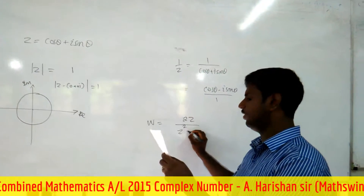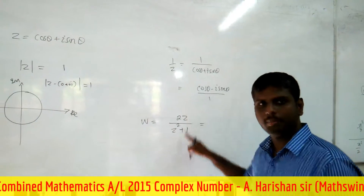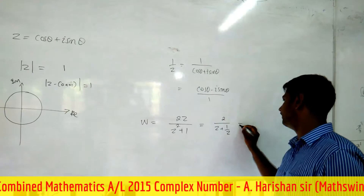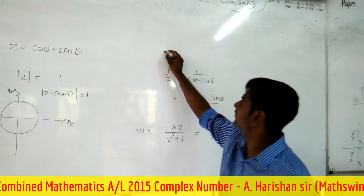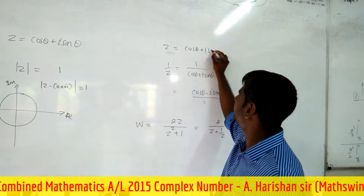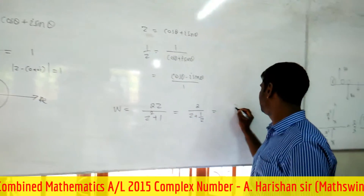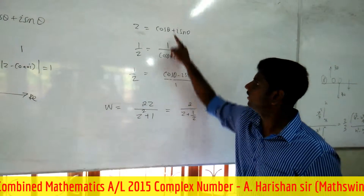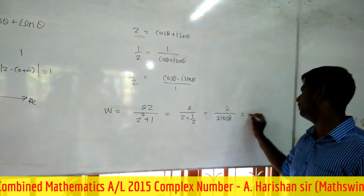They ask: w = 2z/(z² + 1). What we have to do is divide the top and bottom by z, giving 2 over (z + 1/z). Now, z + 1/z = (cos θ + i sin θ) + (cos θ − i sin θ) = 2cos θ.